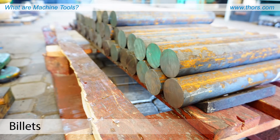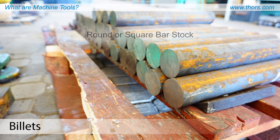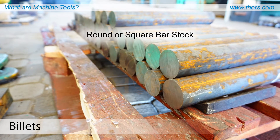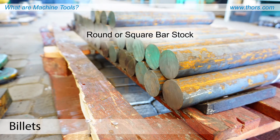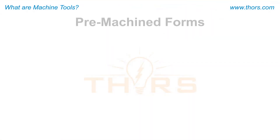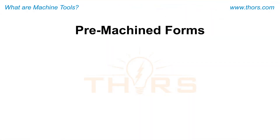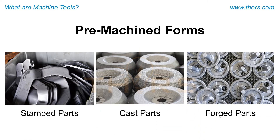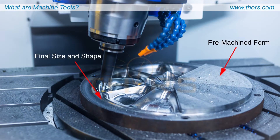Billets are cut lengths of round or square bar stock, which are slightly larger than the desired size of the finished part. Pre-machined forms can include parts that are stamped, cast, or forged. A part would then be machined to achieve the final size and shape, or machined to prepare it for grinding.